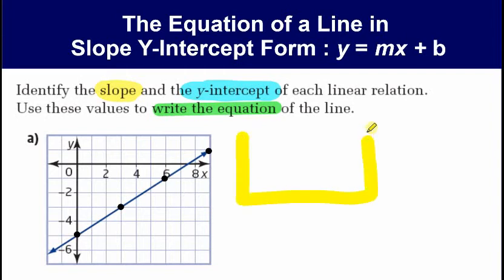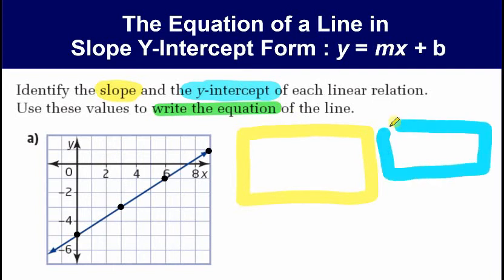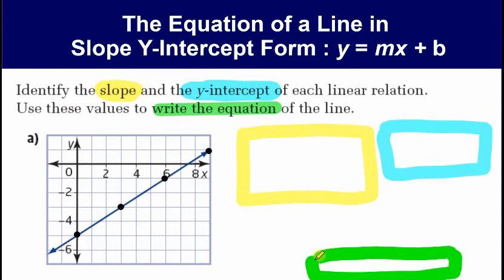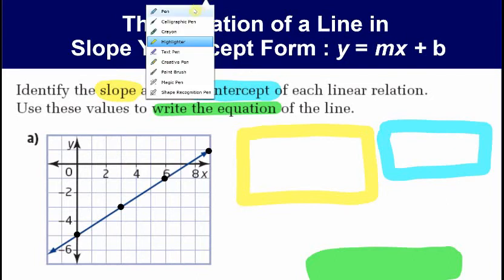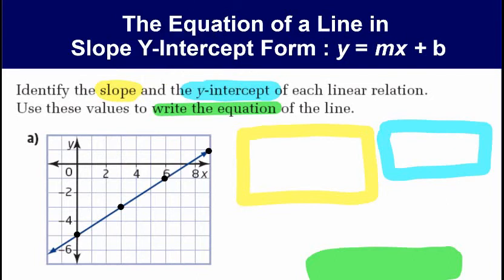I'm going to block off some space for the slope work, some space for the y-intercept, and some space at the bottom for writing the equation. For slope, this shouldn't be too hard — we have a lot of practice determining slope under different conditions. When you're given a graph with some nice easy dots, nothing beats rise over run. So m equals rise over run.